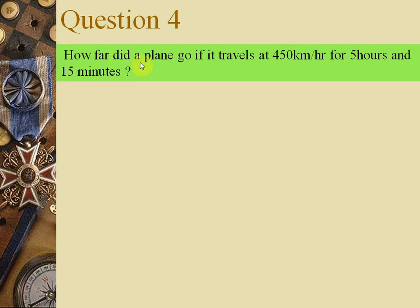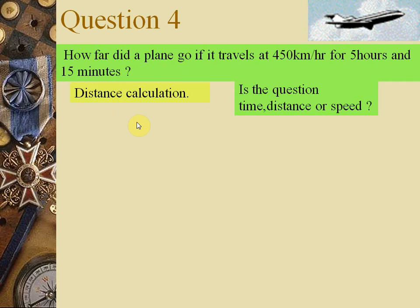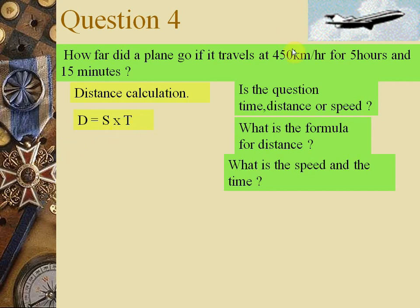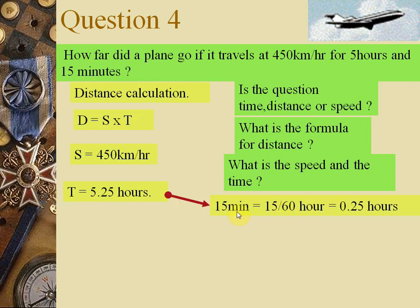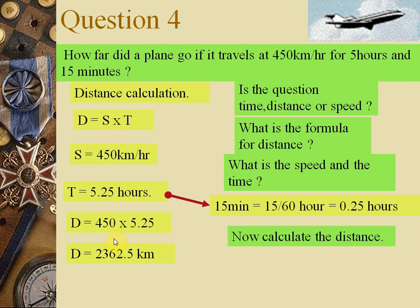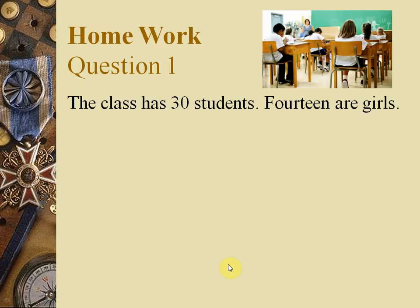Question 4: How far did a plane travel if it moves at 450 km/h for 5 hours and 15 minutes? We need distance. Formula: Distance = Speed × Time. Speed = 450 km/h. Time = 5.25 hours (15 minutes ÷ 60 = 0.25). Distance = 450 × 5.25 = 2362.5 kilometers. That is the distance the plane covered.